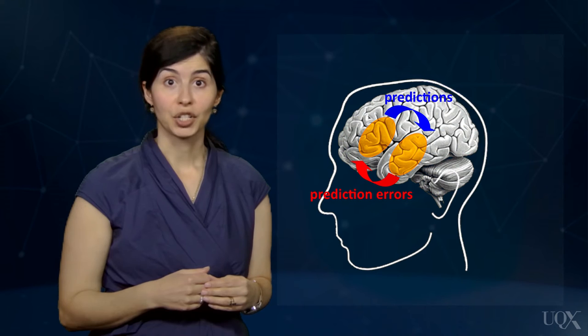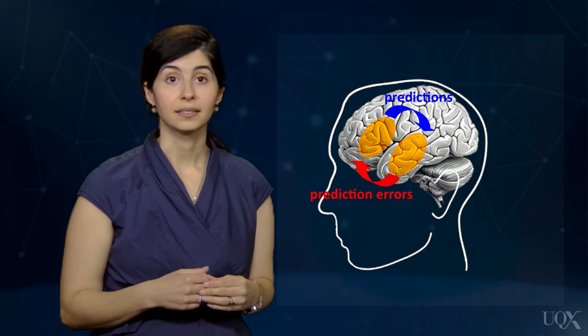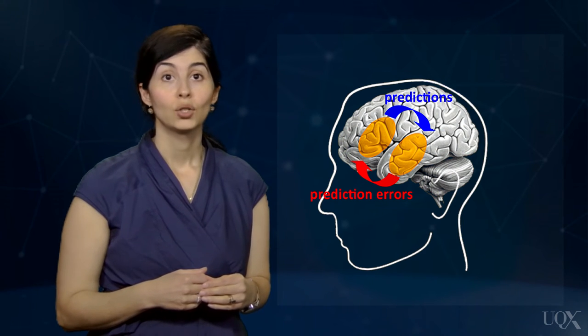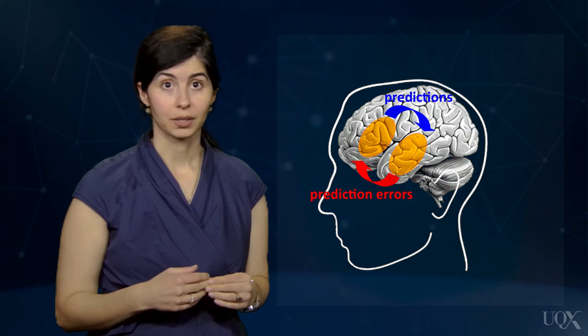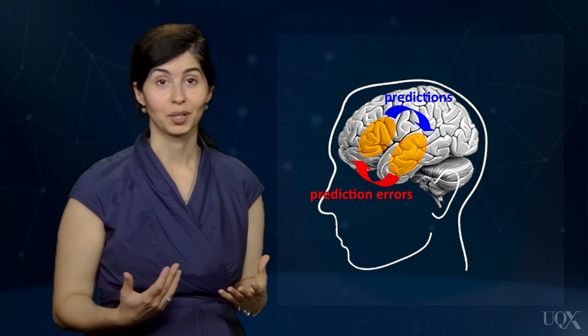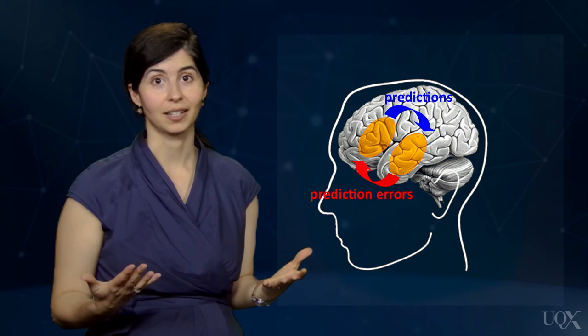These prediction errors send a learning signal to the brain. During learning, errors loop through the brain networks until reconciliation between expectations and reality.